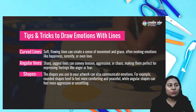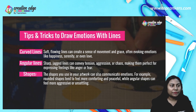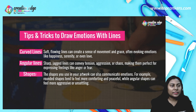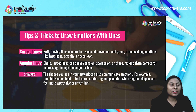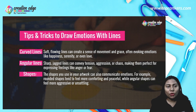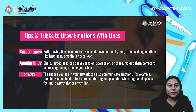There are some tips and tricks to draw emotions with lines — different shapes and lines have different meanings. Curve lines are soft, flowing lines that can create a sense of movement and grace, often evoking emotions like happiness, serenity, or even love.